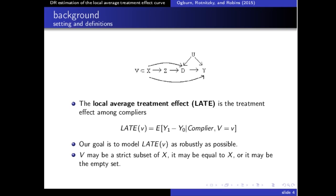The local average treatment effect, or LATE, is defined as the effect of treatment among compliers — those whose treatment we can hope to affect via the instrument, who take treatment when assigned to it and do not when not assigned. Today we're going to talk about the LATE curve, that is, LATE as a function of V, where V is a subset of X, and X are the measured confounders for the effect of Z on Y.